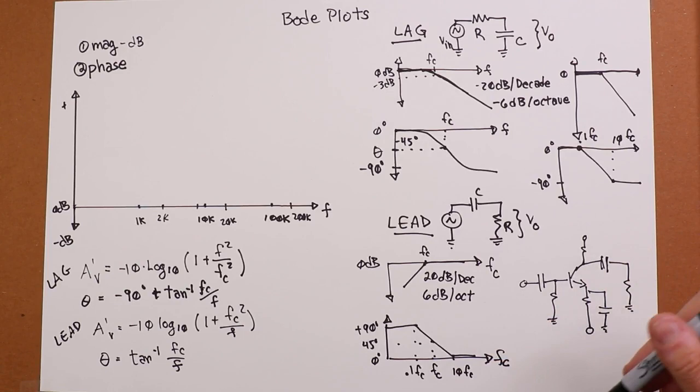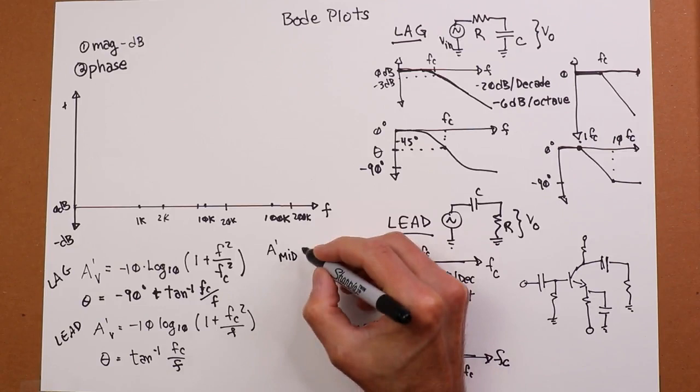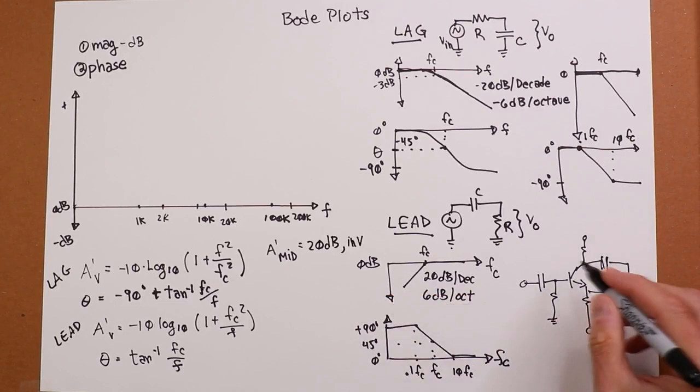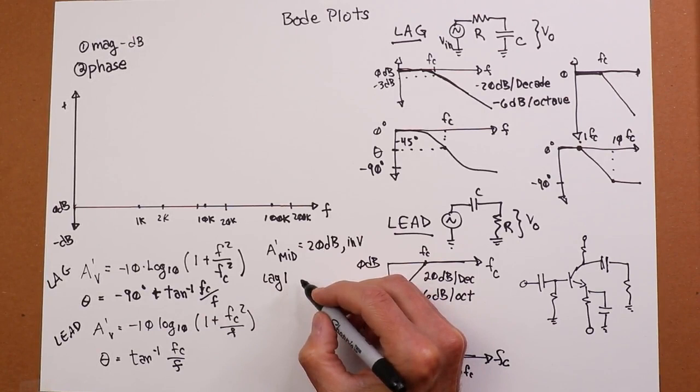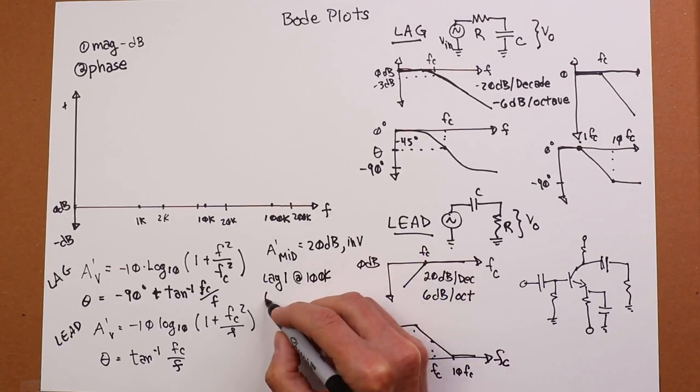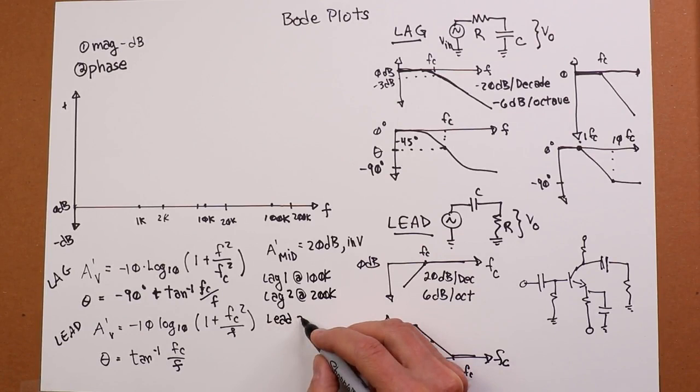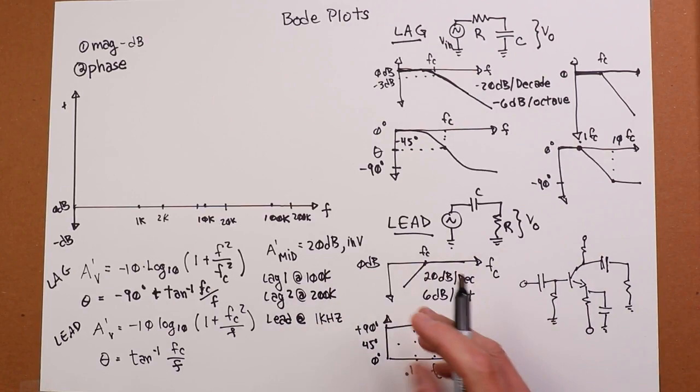So what we wind up doing is something like this. We would say, I have an amplifier. Its mid-band gain, in other words, the kind of gain you would calculate ignoring the caps, might be 20 dB. And it's inverting. Then you could calculate what these critical frequencies are. So maybe you have, just to keep it simple, one lag at 100k. And you have another lag sitting at 200k. And maybe you have one lead at 1k. Nice round numbers.